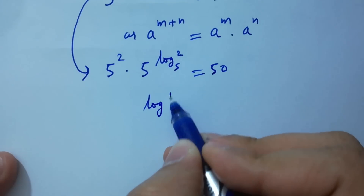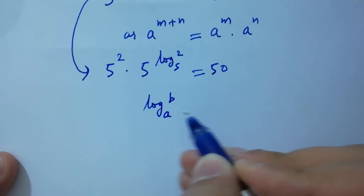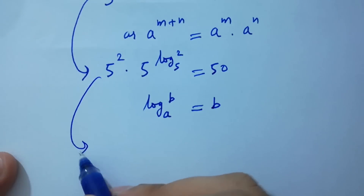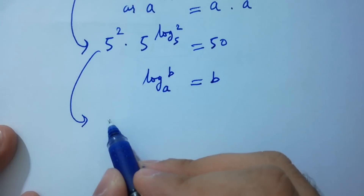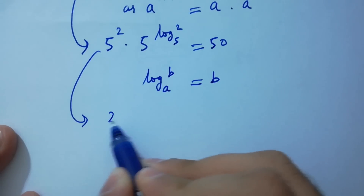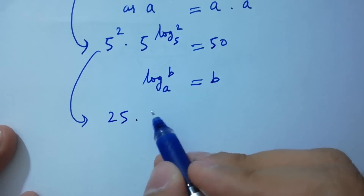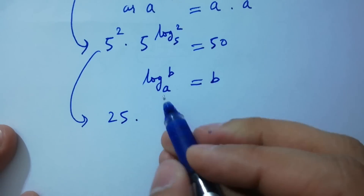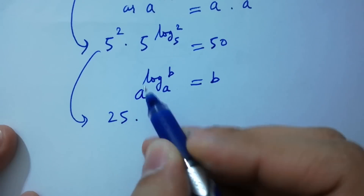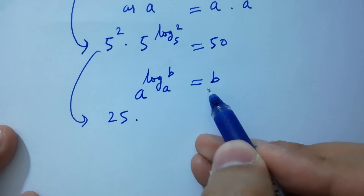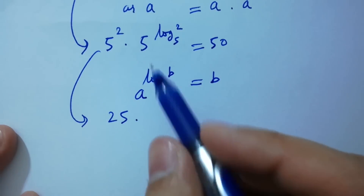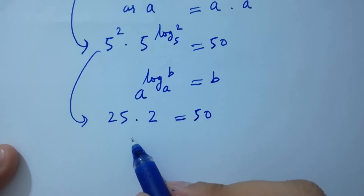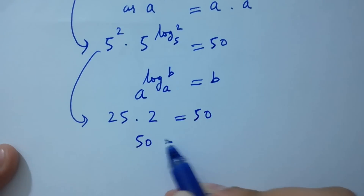Using the identity a to the power log b to the base a equals b, 5 to the power log 2 to the base 5 equals 2. So we have 5 times 5 equals 25, and 25 times 2 gives 50 equals 50. Left hand side equals right hand side, which confirms it satisfies the equation.